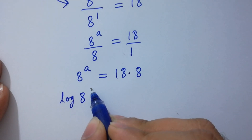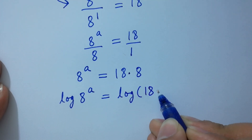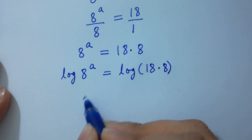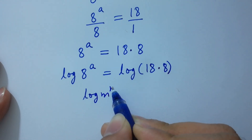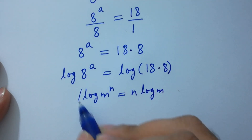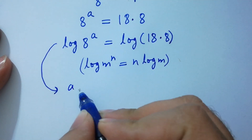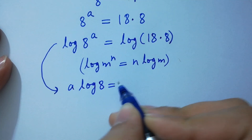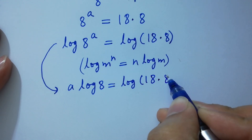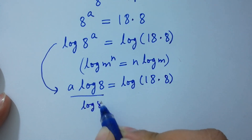Log 8 to the power a equals log of 18 times 8. As log m to the power n equals n log m, we have a log 8 equals log of 18 times 8. Dividing both sides by log 8,